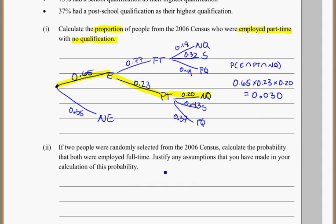Taking a look at the next problem. If two people were randomly selected, so an important aspect here, if two people were randomly selected from the census, calculate the probability that both were employed full-time. And justify any assumptions that you've made in your calculation of this probability.